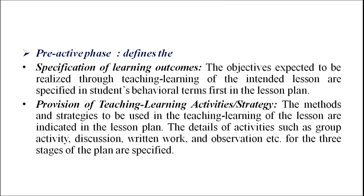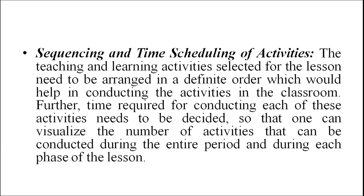The second step is provision of teaching-learning activities and strategies: the methods and strategies to be used are indicated in the lesson plan, including details of activities such as group activity, discussion, written work, and observation for the three stages of the plan. The next step is sequencing and time scheduling of activities — the teaching and learning activities need to be arranged in a definite order to help conduct activities in the classroom, and the time required for each activity must be decided so one can visualize the number of activities that can be conducted during the entire period.